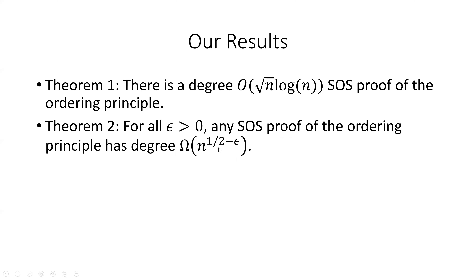Here's our final set of equations encoding the negation of the ordering principle for sum of squares. We have the same pairwise ordering and transitivity axioms as before. And then for the non-minimality axioms, we have that for each j, the sum over i not equal to j of x_ij equals 1 plus z_j squared. So we prove both the sum of squares upper bound and the sum of squares lower bound. For the upper bound, we show that there's a degree O(√(n log n)) sum of squares proof of the ordering principle. For the lower bound, we show that for all epsilon > 0, any sum of squares proof has degree omega(n^{1/2 - ε}). So this upper bound is essentially tight.